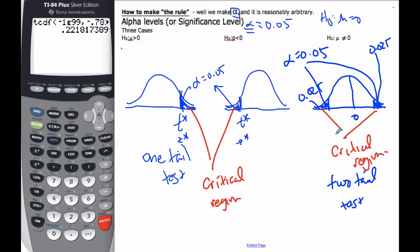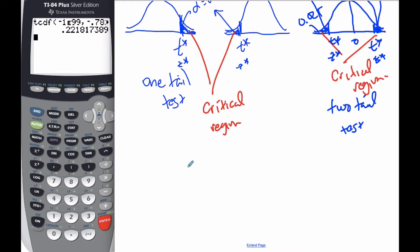And so this is still t-star and z-star, and t-star and z-star. And so this is all where we are making our rule. We make our rule with alpha and we make our rule with t-star. Alpha is the area under the curve, and this is the position on the axis.